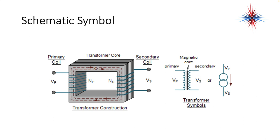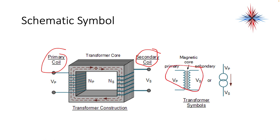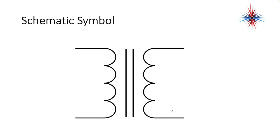If we take a look at the schematic symbol in the layout of the transformer, we have the primary coil — basically wires wrapped around an iron core, which is the transformer core. The secondary side is my output voltage. V-P stands for voltage primary, V-S stands for voltage secondary. The schematic symbol is actually real easy: it's two coils with a magnetic core. That's your transformer symbol — primary winding, secondary winding.